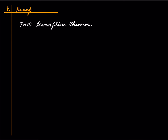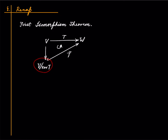Let us recall briefly: suppose we have a linear map T from a vector space V to W. Then we have an induced map from V mod kernel T to W such that this diagram commutes, and this is an injective map purely for set theoretic reasons because this is precisely the set of all the fibers of T. The isomorphism is between V mod kernel T and the image of T, and since this map is injective we get a bijective linear map from V mod kernel T to the image of T.